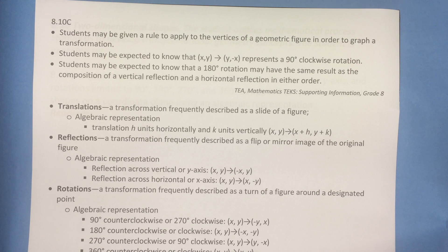Students may be expected to know that (x,y) transformed to (y, -x) represents a 90 degree clockwise rotation. Students may be expected to know that a 180 degree rotation may have the same result as a composition of a vertical reflection and a horizontal reflection in either order.